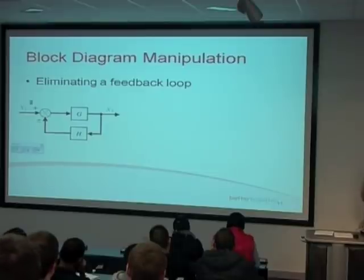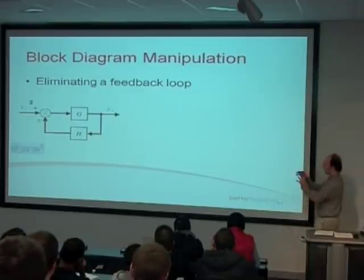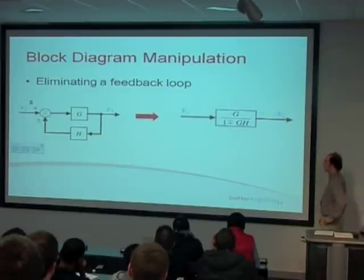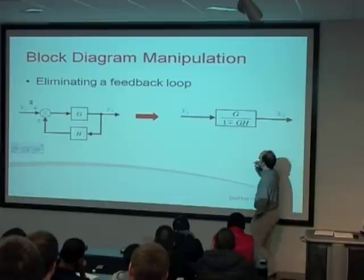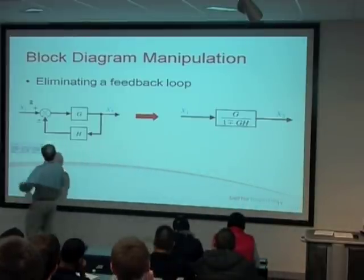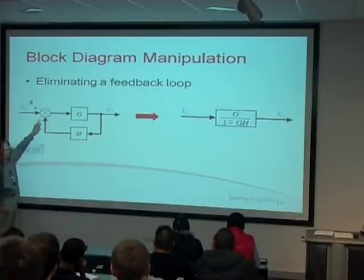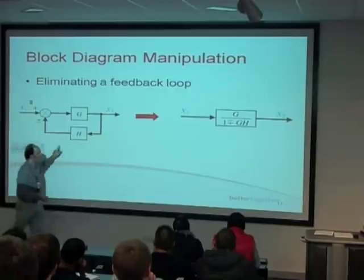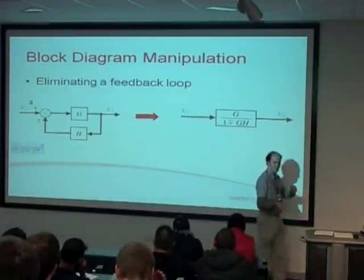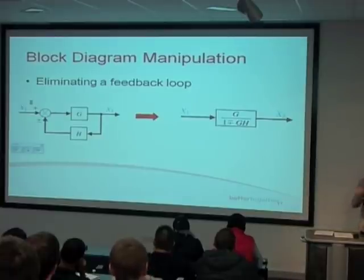Eliminating a feedback loop: you've got G and H, and that becomes G over 1 plus GH. Notice that if you've got a minus sign - negative feedback, which is the most common - that minus sign being on the bottom means it becomes a plus sign on top. Don't get that confused: G over 1 plus GH for negative feedback loops.